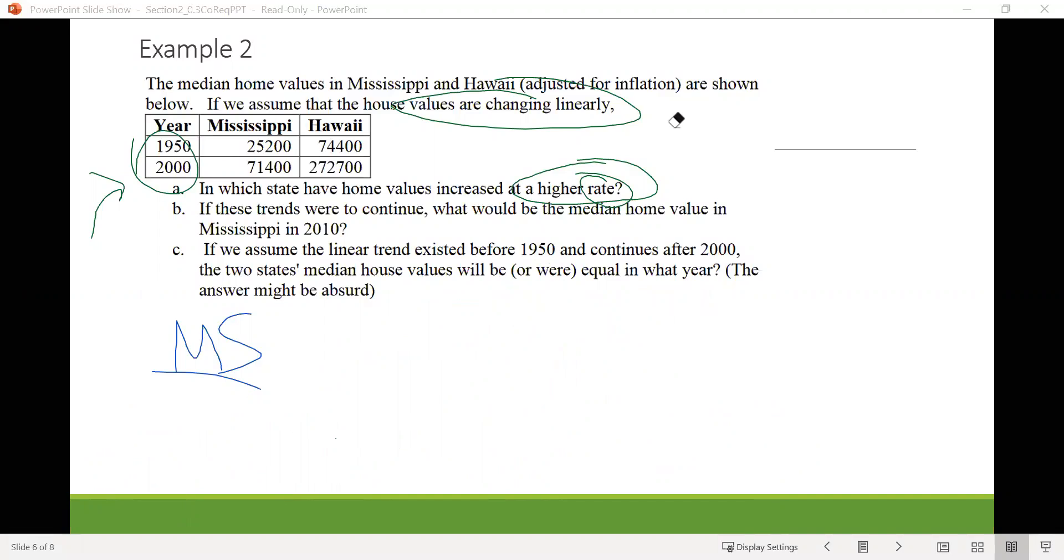For Mississippi we had 924 dollars per year. Now look for Hawaii. Again just as before let's make some points. Using the years and the home values, we're gonna do years since 1950. First point would be 0 comma 74,400. Second point would be 50 comma 272,700.